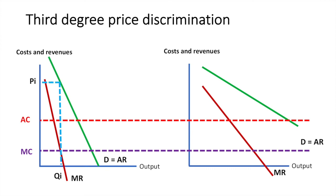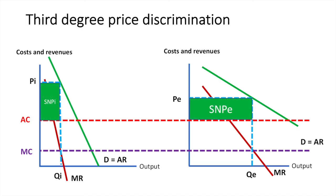The price in the inelastic market is higher than the price charged by the firm with the markets combined. The area labelled SNPI is the supernormal profit from this specific market. We do the same in the elastic market and get supernormal profits there, labelled SNPE. This price is lower than the previous price charged by the firm. These two areas combined should be greater than the initial supernormal profits if the firm has discriminated successfully.